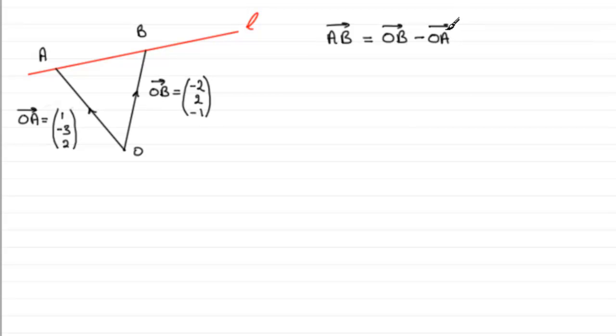It's a standard result that I'd encourage you to always remember. And you can see it works going from A to B. It's just going to be A to O followed by O to B. A to O though is the same as negative OA, which is what we've got here.